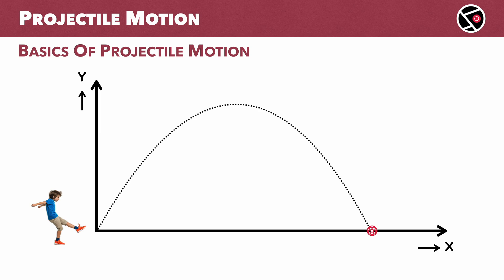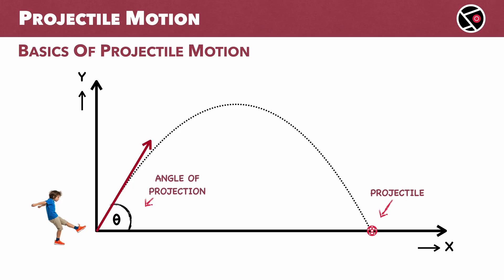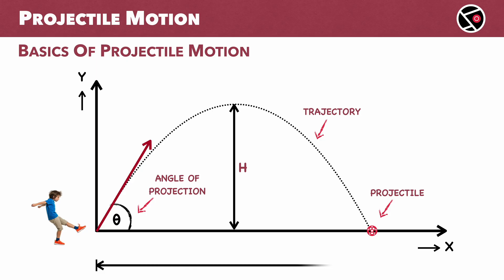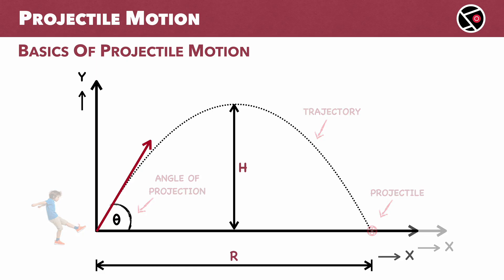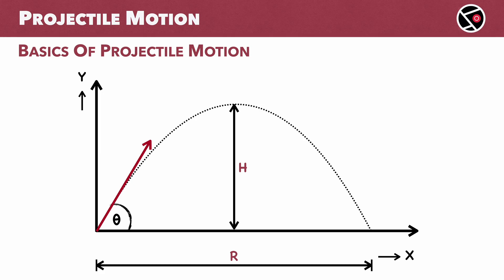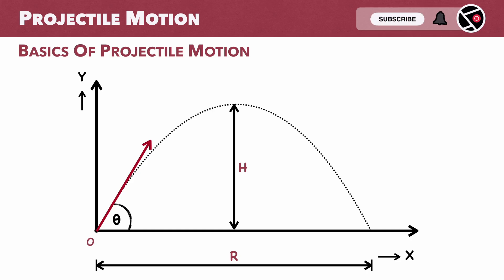In this example, the ball is the projectile. The angle it makes with the ground, angle theta, is the angle of projection. The path taken by the ball is the trajectory. The maximum height the ball reaches is H, and the horizontal distance it travels is the range R. Let me also mark a few key points on the trajectory: the starting point O, the highest point M, and the landing point P.